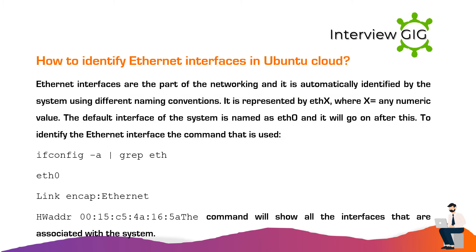How to identify Ethernet interfaces in Ubuntu Cloud: Ethernet interfaces are part of networking and are automatically identified by the system using different naming conventions. They are represented by ethX, where X equals any numeric value. The default interface of the system is named eth0. To identify the Ethernet interface, the command used is ifconfig -a | grep eth, which returns eth0.